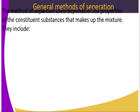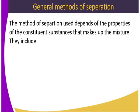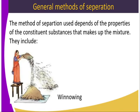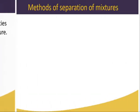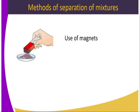What are the general methods used in separating mixtures? The method of separation used depends on the properties of the constituent substances that make up the mixture. Some of these methods include winnowing, which is used in our day-to-day life activity. We also have picking. These are some of the methods learned at our previous level. We also have use of magnets.